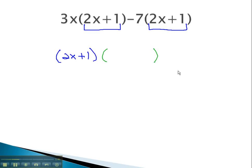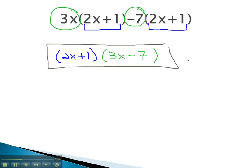In the next set of parentheses, we put in what's left when we divide out the 2x plus 1. We're left with a 3x and a negative 7. This becomes our solution, 2x plus 1, times 3x minus 7.